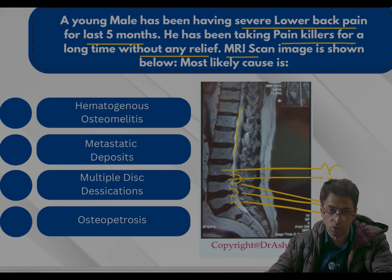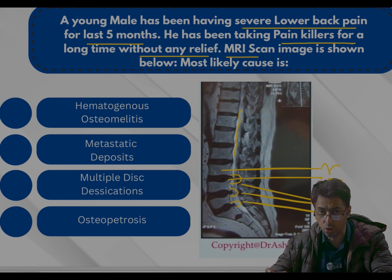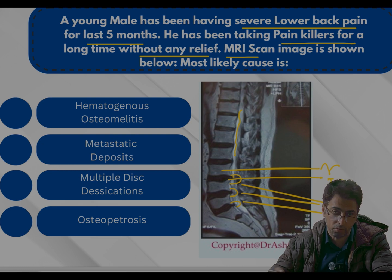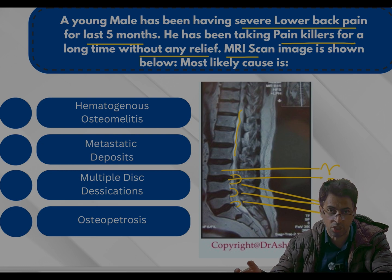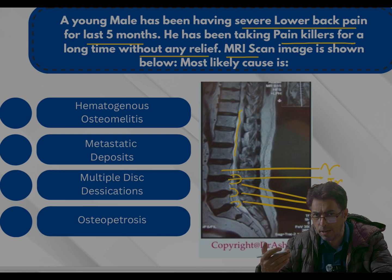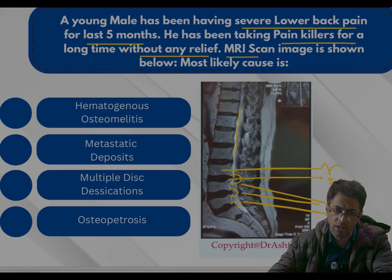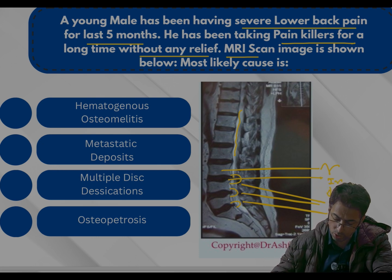This is not acute hematogenous osteomyelitis. The metastatic deposits from any malignancy elsewhere — there is no history suggesting that. So the correct answer is multiple disc desiccations. This also tests your ability to identify these lesions on imaging, whether ultrasound, CT, MRI, or radiographs.